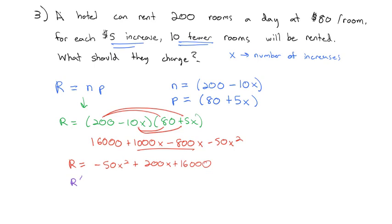It's maximized at the derivative. So we find the derivative, which is negative 100x plus 200. Set that derivative equal to zero. Adding 100x to both sides, we get 200 equals 100x. Dividing by 100, x equals 2.